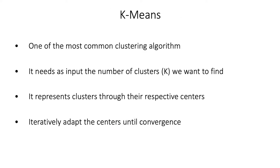K-means is one of the most common clustering algorithms. It is called k-means because it takes as input the number of clusters, usually referred to as k — so we have to tell the algorithm how many clusters we want to find. In general we don't know how many clusters to find, which is a downside of the algorithm. Every cluster is represented by its respective center or centroid, and the algorithm iteratively updates the centers until convergence.